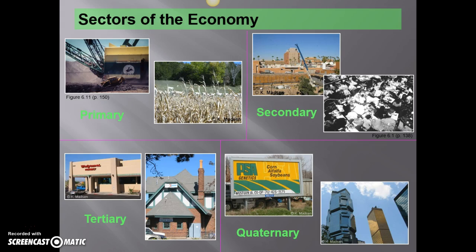The last section we're going to talk about right now is what's called quaternary economic activity. This is really anything related to information — gathering and using information. Quaternary activities include people like college professors and high school teachers. Google is dedicated entirely to quaternary activities because their mission is to take all the information in the world and make it accessible. Really anybody doing research or research and development type activities — those are all quaternary activities.